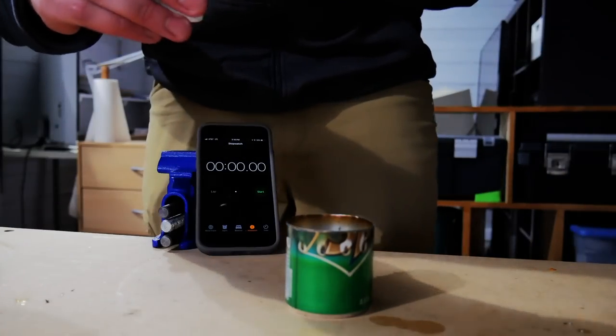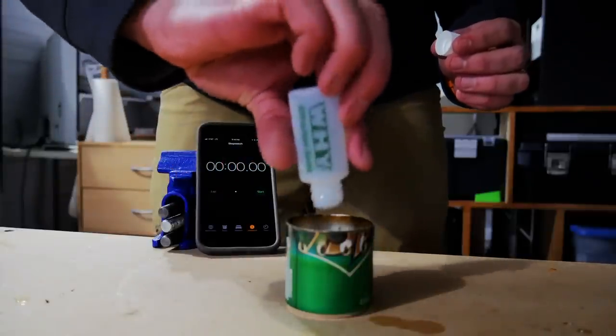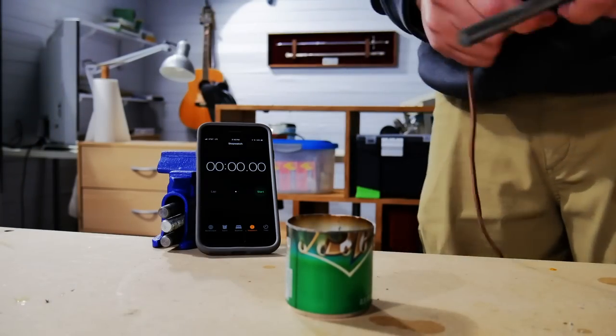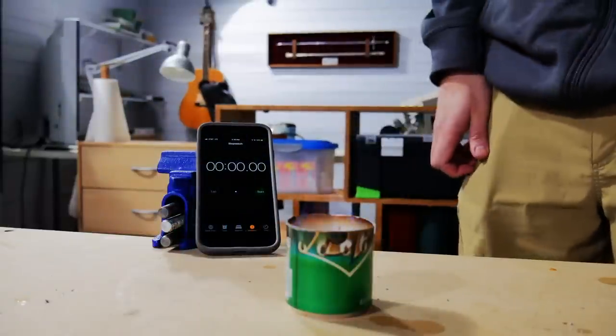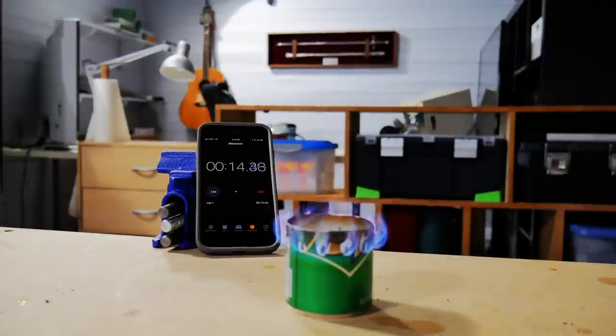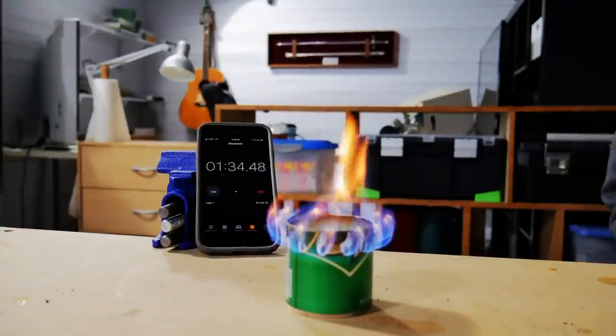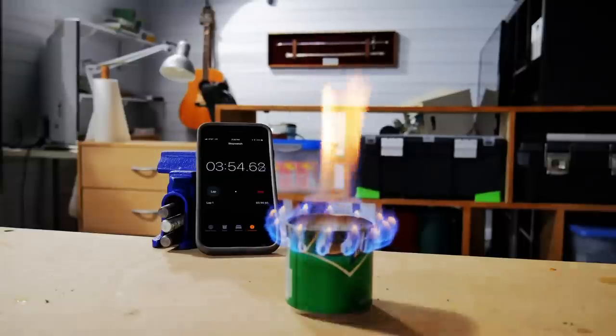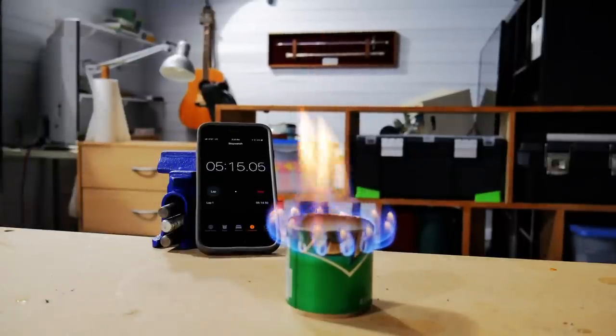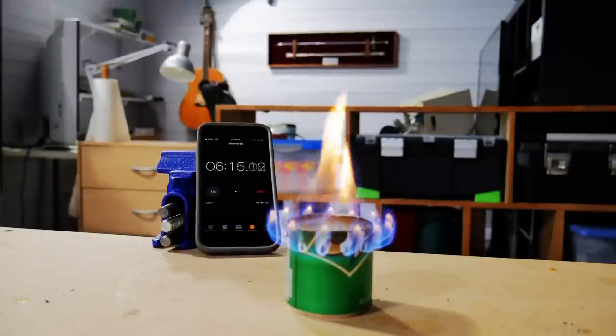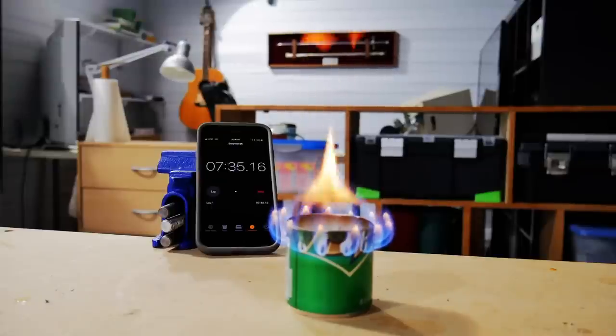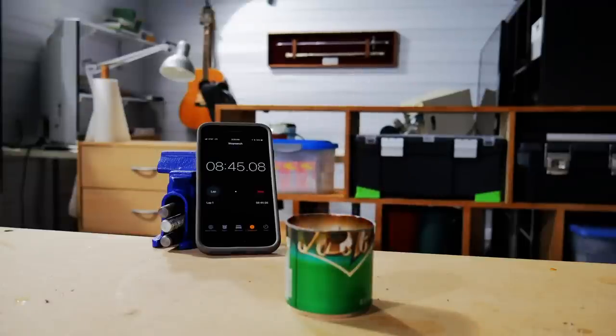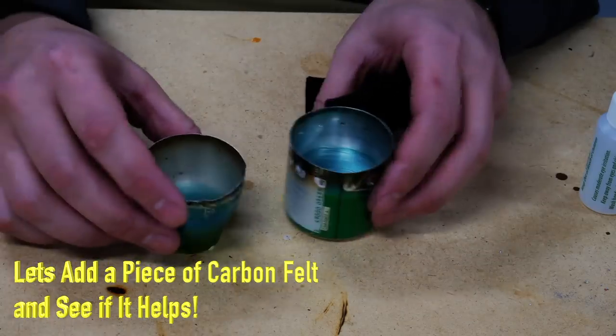So we have one ounce of denatured alcohol. Let's put it to the test a little bit. This is exactly one ounce. Now this test is going to be a little bit misleading because there's no pot on it. When you put the pot on it, it actually makes the alcohol last quite a bit longer. So I didn't start the timer until I got a bloom. You can see a lot of the alcohol just burns from the center. And when you make the alcohol only burn from the vents, it works much better and lasts much longer. In fact, about twice as long on one ounce of fuel. So as you can see it's starting to die down. I got about 8 minutes 45 seconds worth of burn time with nothing on top of it.